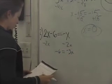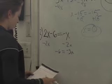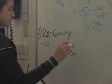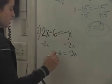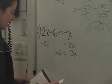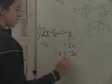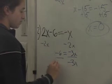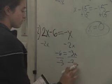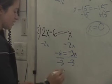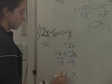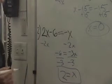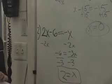Keep talking, guys. Don't just go up there quietly — explain what you're doing. What did you do? You subtract 2X from both sides, and then you get negative 6 equals negative 3X. And then you divide by 3X. That looks good. Does anybody have any questions? Give her a hand.